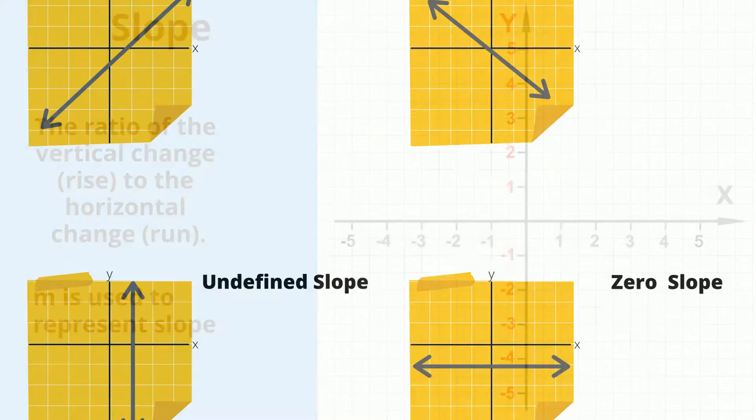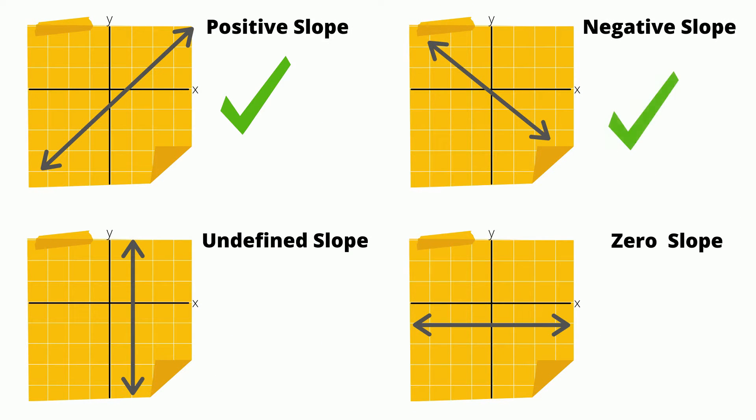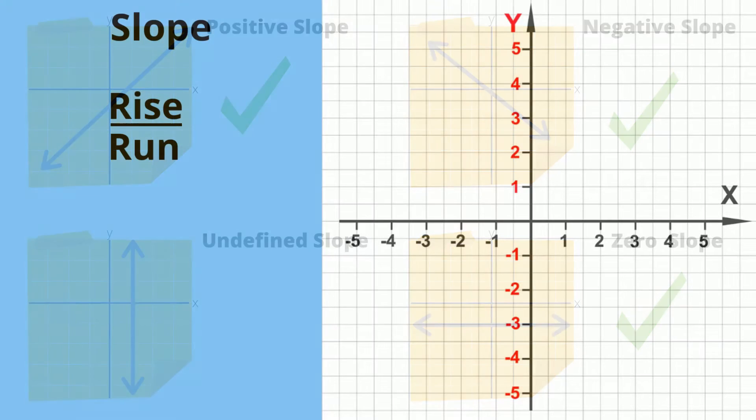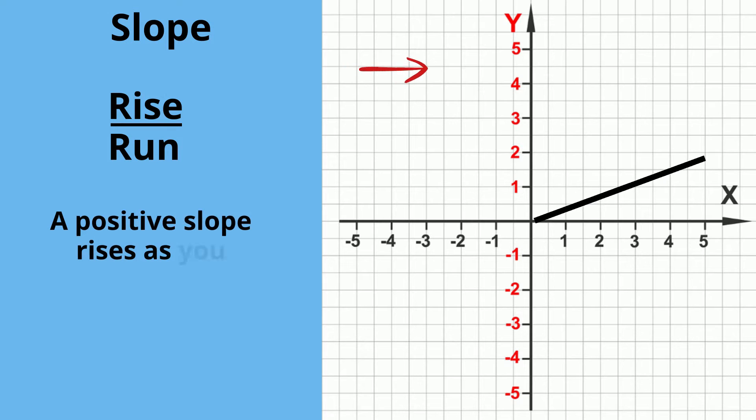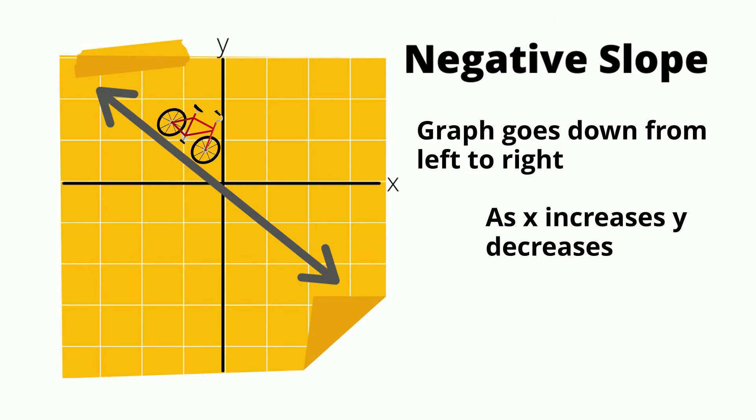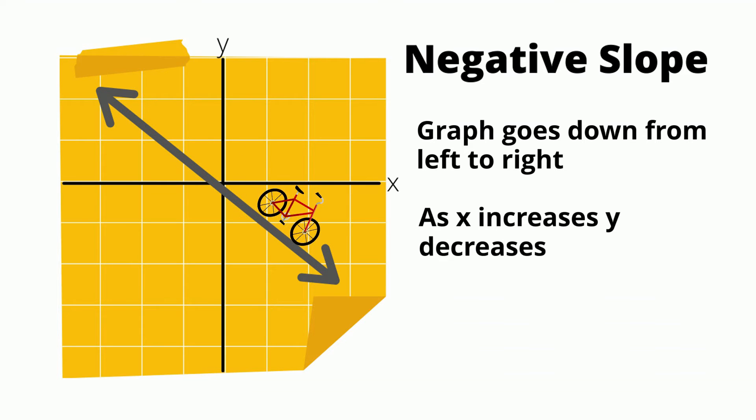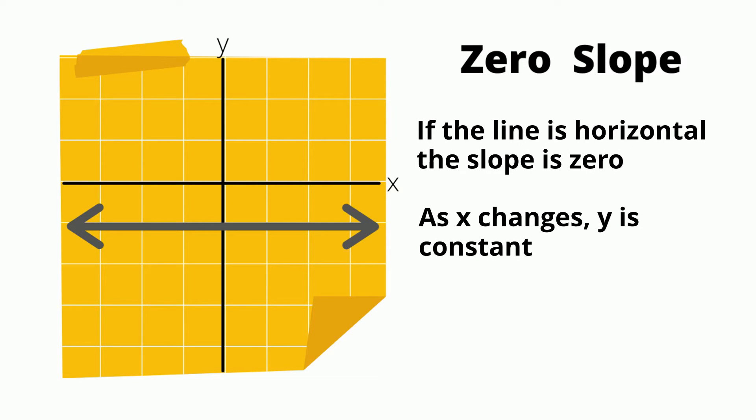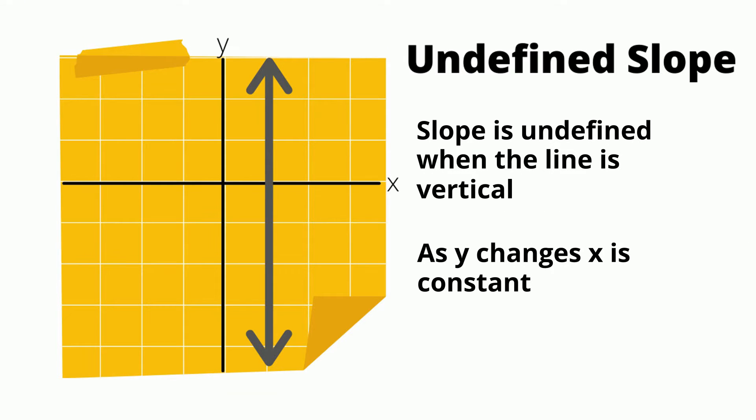The slope of a line can be positive, negative, or zero. A positive slope indicates that the line is rising from left to right. A negative slope indicates that the line is falling from left to right. A zero slope indicates that the line is horizontal, and a vertical line has an undefined slope.